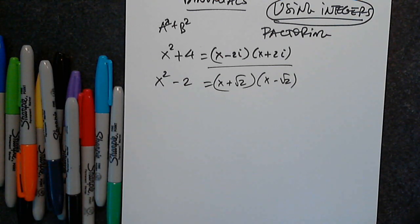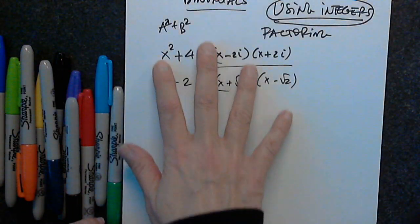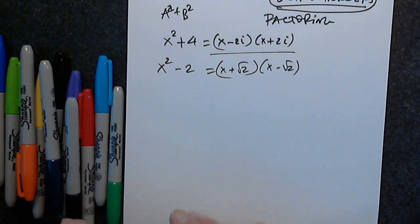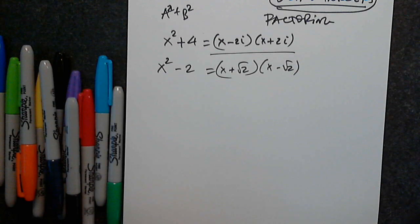Very good question. There's a very good proof on YouTube about that particular problem. What they do is they'll take x squared plus 4 and they'll turn it into x squared minus minus 4. And they should make that to be odd.